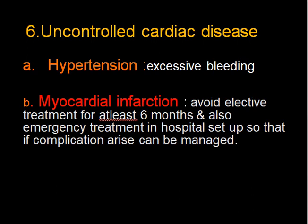The sixth condition is uncontrolled cardiac disease, of which hypertension is most common. In a patient where blood pressure is very high, attempted extraction will lead to excessive bleeding. Regarding myocardial infarction, if a patient has a history of MI, one should avoid elective treatment for at least six months, and emergency treatment should be done in a hospital setup so that if complications arise, they can be managed appropriately.